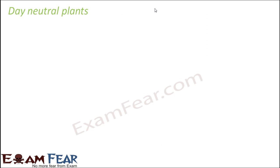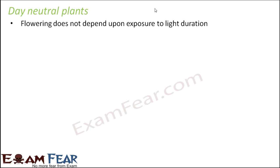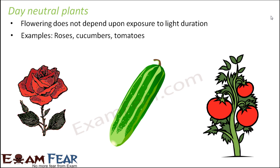The third type are day neutral plants. In these plants, flowering does not depend upon the duration of light exposure. They may initiate flowering after a certain stage or after a certain age, independent of how long the days or nights are. Examples of such plants are roses, cucumbers, and tomatoes.